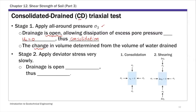The second stage of a CD triaxial test is to apply the deviator stress very slowly. Again, you keep the drainage open. If you keep the drainage open and allow the excess pore water pressure to dissipate, then the excess pore water pressure generated, delta UD, is zero. You apply it very slowly and keep all drainage open, so it gets dissipated. This is the drained condition — that's what the second letter stands for.